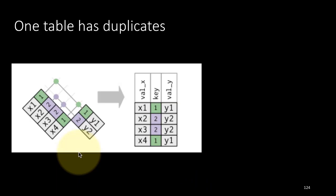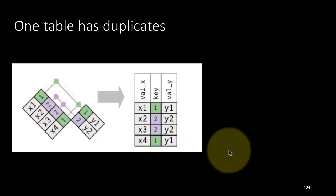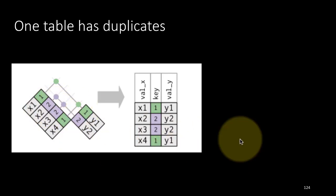There are also scenarios when one table ends up with duplicates. For example, if the key 2 repeats in one table, when you do a join, the 2 in the second table matches 2 rows. So you'll see x2, 2, y2 and x3, 2, y2 — both of them appear in the output, because both rows match with that single row. When one table has duplicates, the values are going to repeat in the output. In this example, the tables are created using the specific code shown, and we say left_join(x, y) because we are not using pipes.